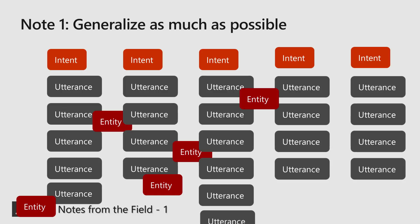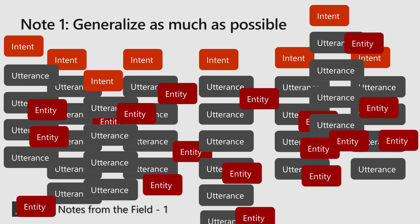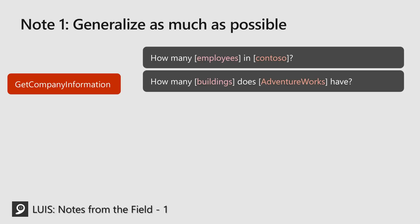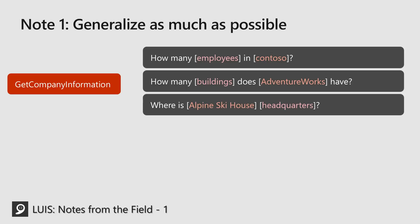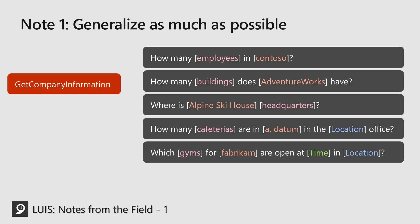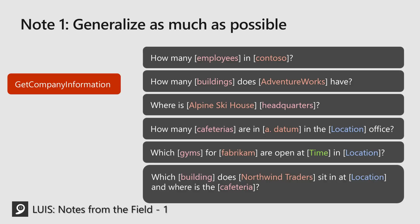Then people ask: can we add some more intents, can we add more utterances? And over time, you'll notice things get really complicated, and one day you'll train your model and it just won't work well. For example, let's say we're asking questions about a company — we have one intent called 'get company information.' Questions like 'how many employees in Contoso,' 'how many buildings does AdventureWorks have,' or 'where is Alpine Ski House headquarters?' This works great. But then we start adding more company names and more options, and inevitably it gets harder to keep up with the number of utterances, and we'll see a drop in performance.